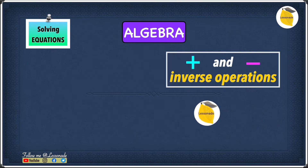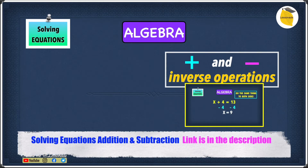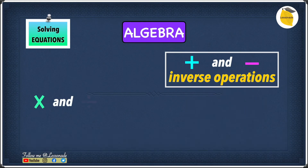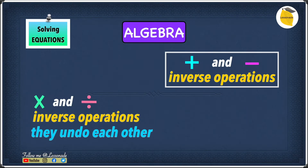In the previous video, we learned that addition and subtraction are inverse operations, so they undo each other. In this video, we are going to know that multiplication and division are also inverse operations and they undo each other as well.